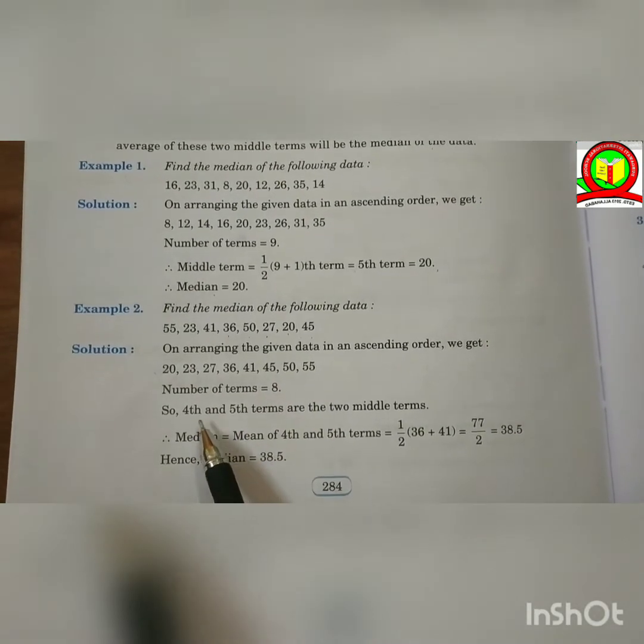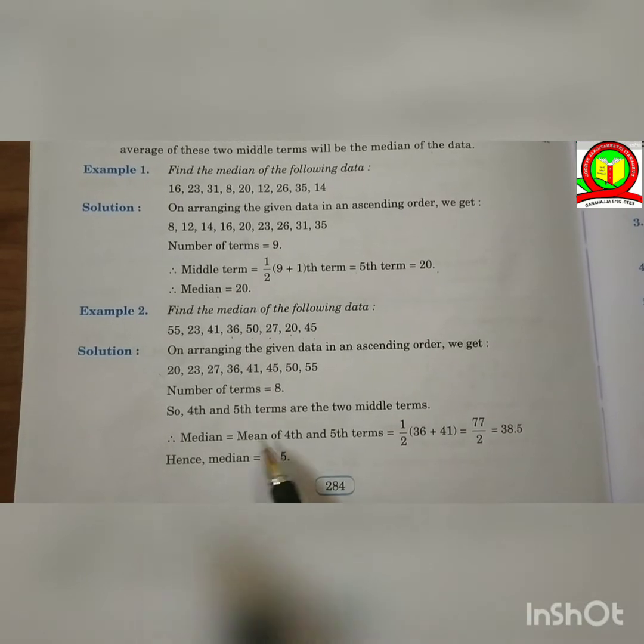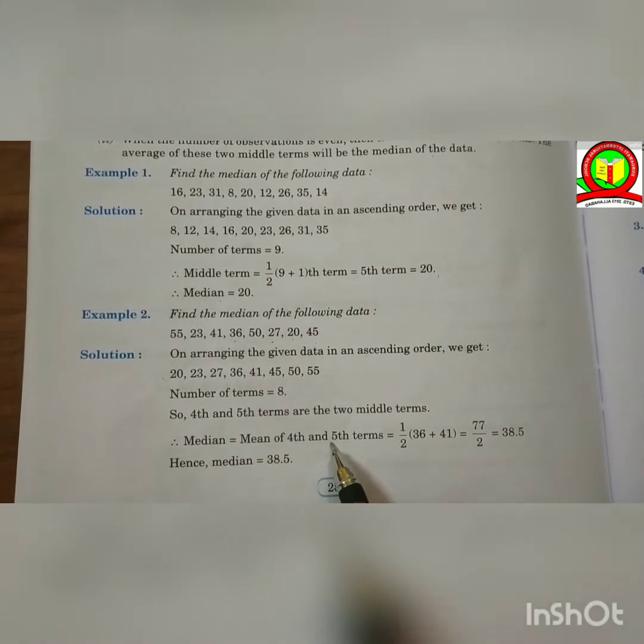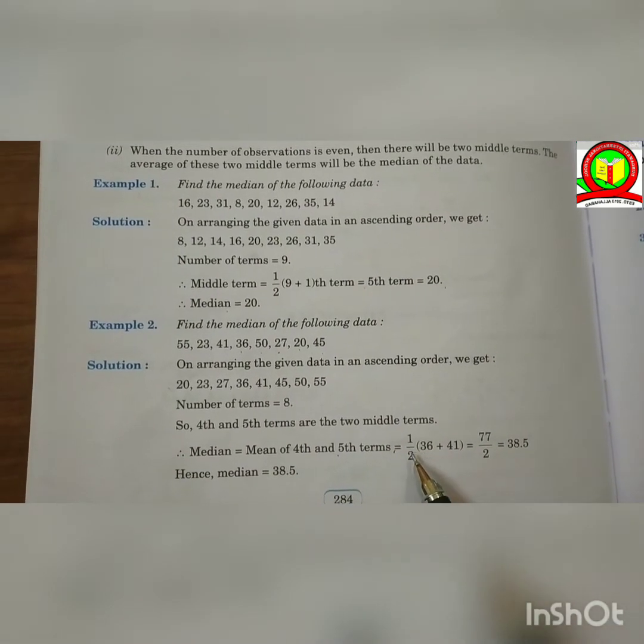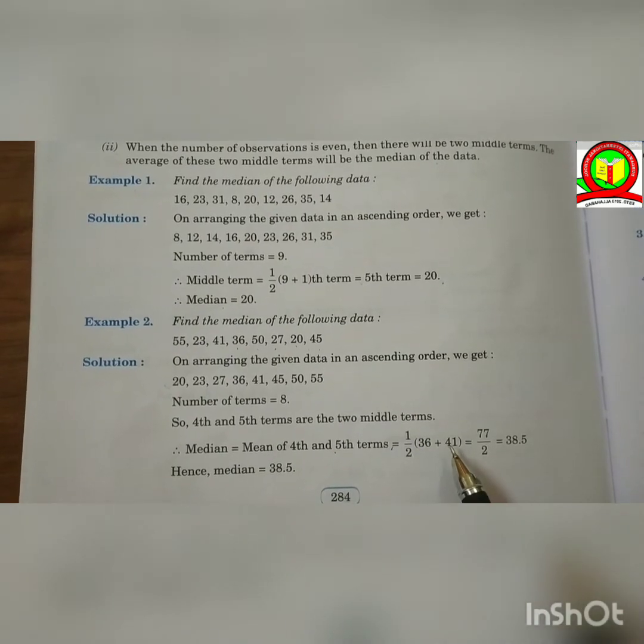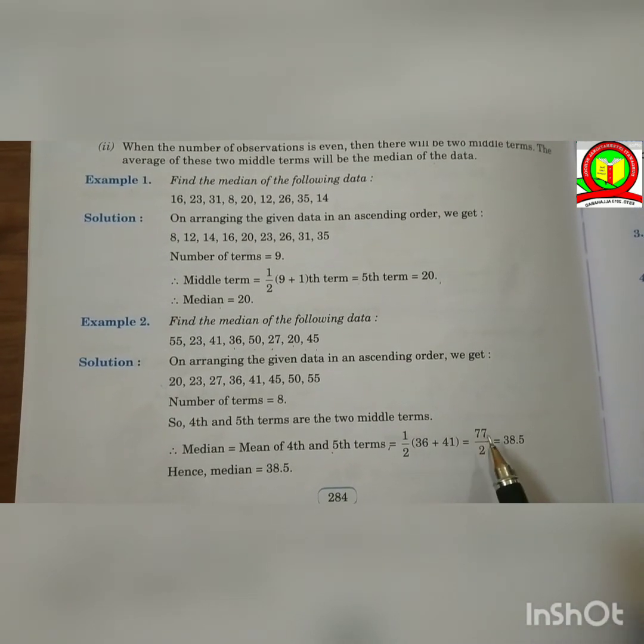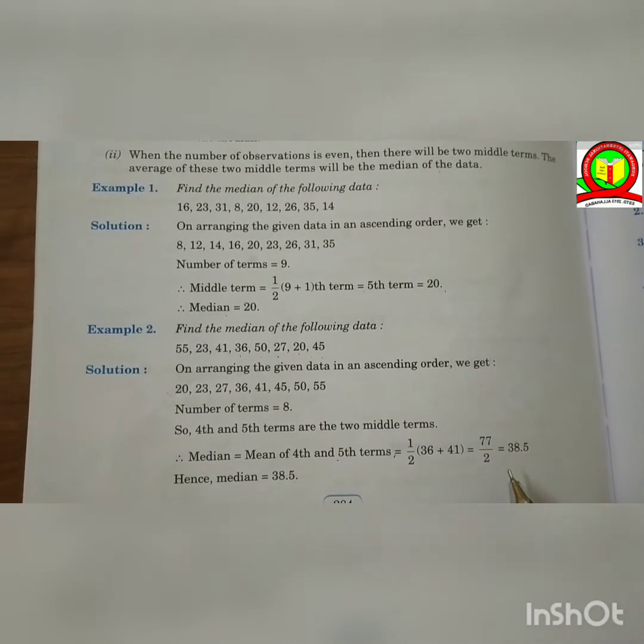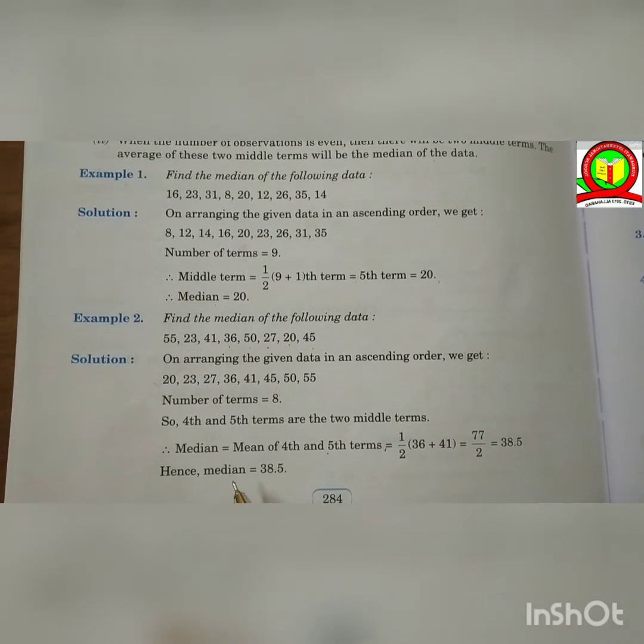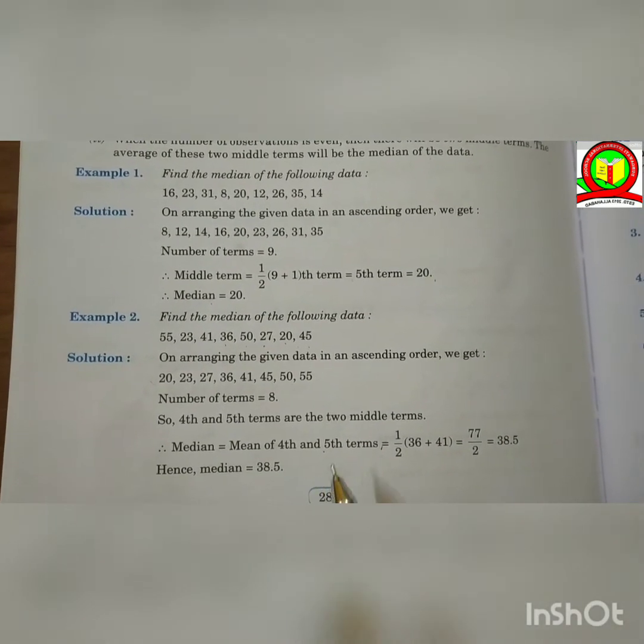So, 4th and 5th term are the two middle terms. So, median is equal to mean of 4th and 5th terms is equal to 1 divided by 2 times (36 plus 41) is equal to 77 divided by 2 is equal to 38.5. So, the median is equal to 38.5.